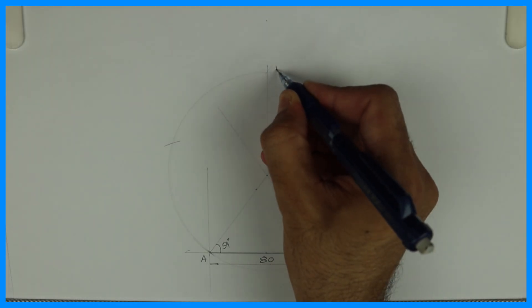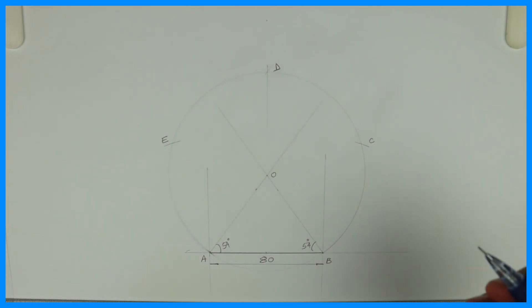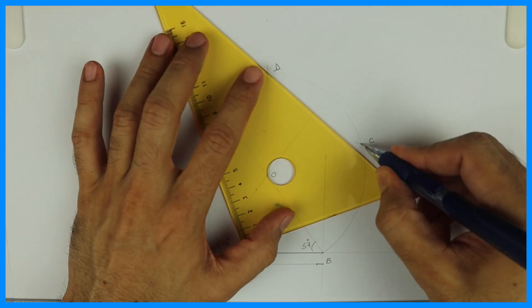So we got points C, D, and E. Also join all those points. We'll get the required pentagon.